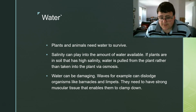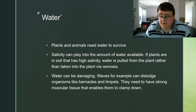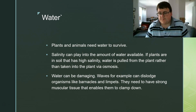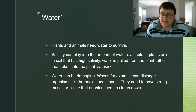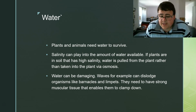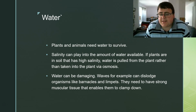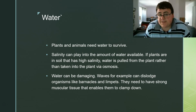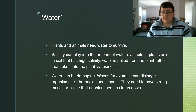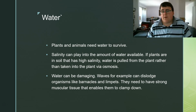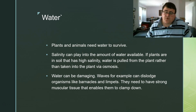Lastly, we're going to look at water. Plants and animals need water to survive. Salinity plays an important part because if it's too salty, osmosis will pull water away from the plant rather than take water into it — so you need the right salinity to prevent water moving the wrong direction. Water can also be damaging through waves, which can dislodge organisms like barnacles and limpets. Those organisms have adapted with strong muscular tissue, clamping down to avoid disruption. So water is important because we need to drink it, it has to be the right salinity to prevent osmosis going the wrong way, and it can be damaging — destroying and destructing habitats.